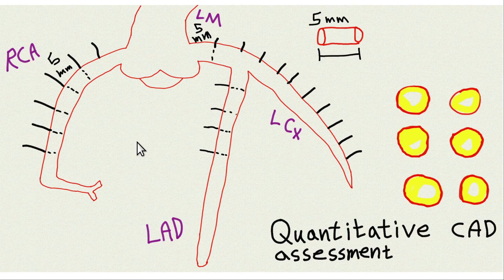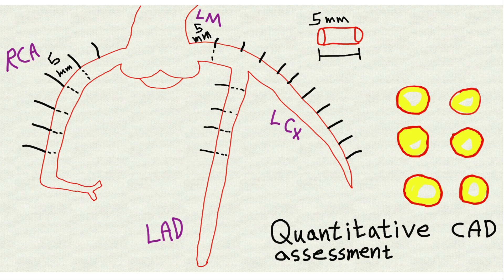You can't just bypass one spot and be done. You can't just stent one spot and be done. This was also his way of explaining why cardiac cath always underestimates the amount of stenosis — the amount of narrowing in the coronary arteries.